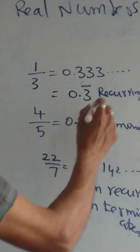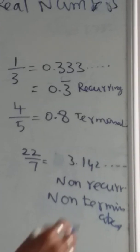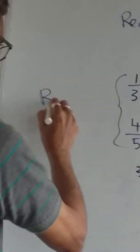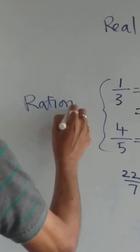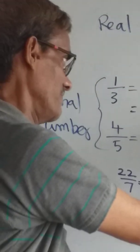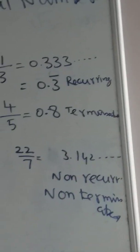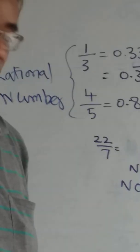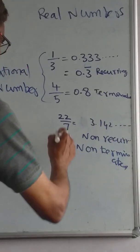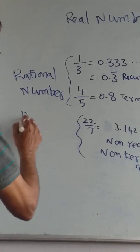Whichever number is recurring or terminated, those numbers we call rational numbers. If the number is non-recurring and non-terminated, then we call it an irrational number.